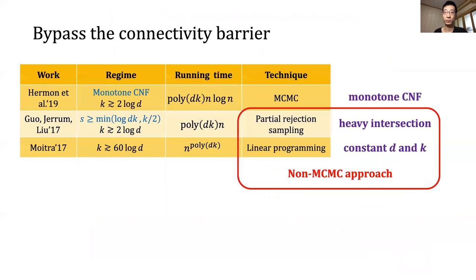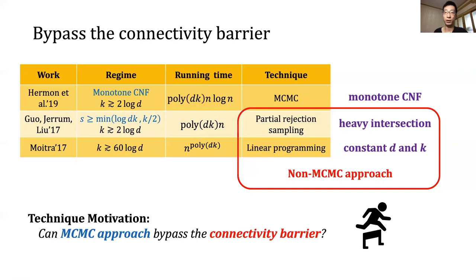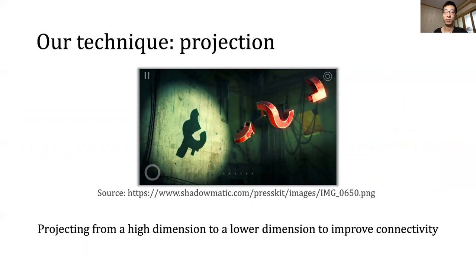Previously, MCMC approach only works on the monotone case because of the connectivity barrier. Other works came up with non-MCMC approaches, but they only work for restricted classes of CNF formulas. The open problem is: can the MCMC approach bypass the connectivity barrier? We answer this open problem by giving a new technique: projection. We project from a high dimension to a lower one to improve connectivity. In this picture, three red objects are disconnected in the three-dimensional world, but after projection their shadows are connected in the two-dimensional world.